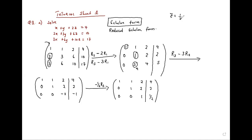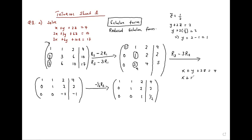This means that if we take this in the reduced echelon form, we'll directly get the value of x and y. Or from here, we'll say: y plus 2z is equal to 2, meaning y plus 2 times half is 2. That is, y is 2 minus 1, which is 1. So y is 1. We can get x because x plus y plus 2z is 4. This is x plus 1 plus 2 times half equals 4, that is x plus 1 plus 1 equals 4, so x is 4 minus 2, which is 2.